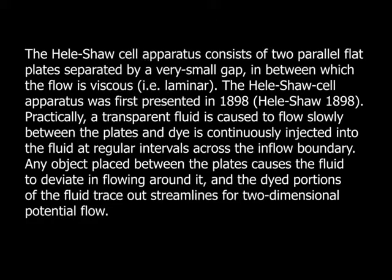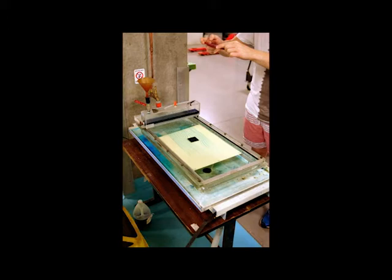Practically, a transparent fluid is caused to flow slowly between the plates and dye is continuously injected into the fluid at regular intervals across the inflow boundary. Any object placed between the plates causes the fluid to deviate in flowing around it, and the dyed portion of the fluid traces out the streamlines for two-dimensional potential flow.